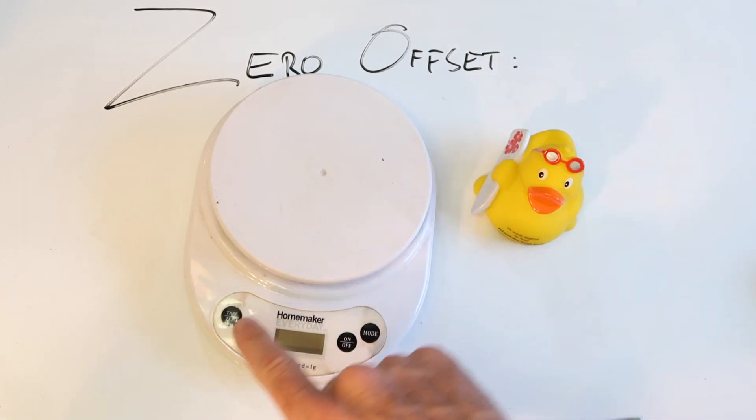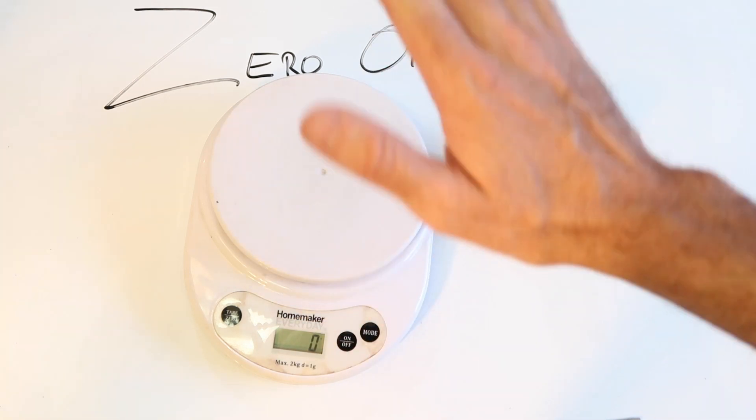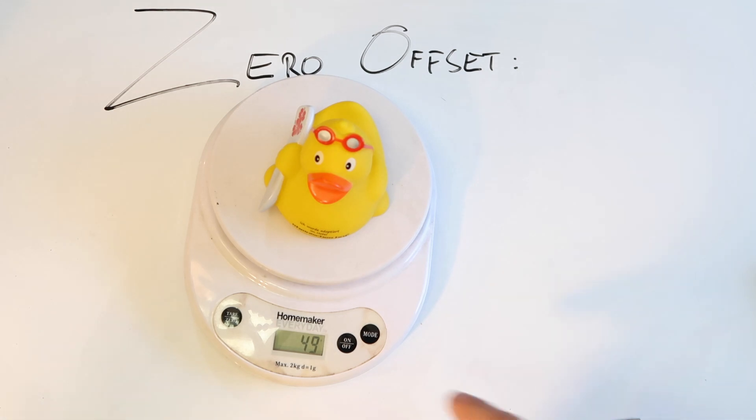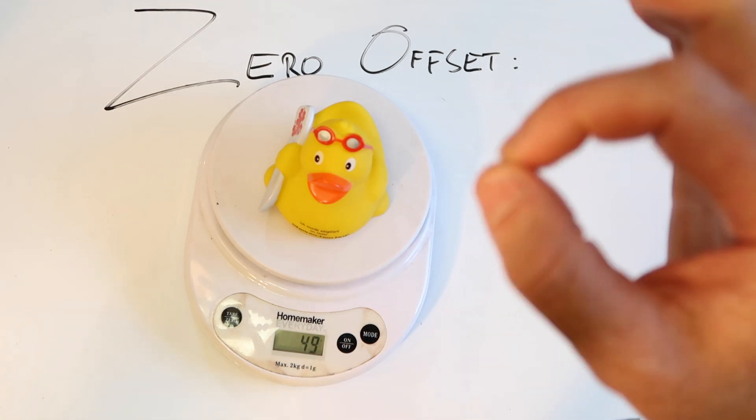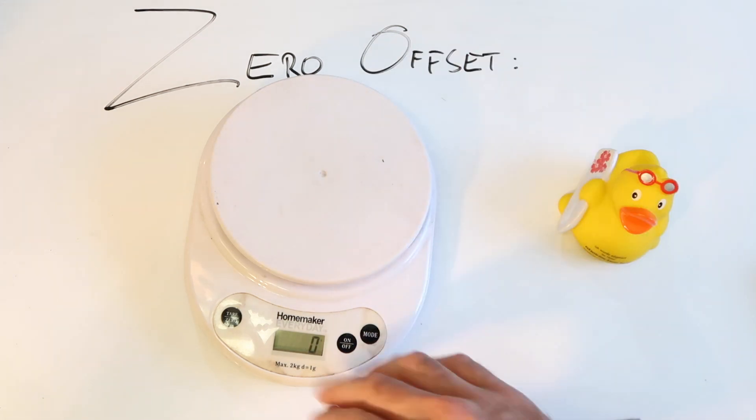Zero offset. Okay, the button here is called tear slash zero. That is exactly the same as when you zero your power meter. So we'll turn this machine on. There is no weight put on this, so there's zero, effectively zero torque or zero pressure on this. So we put the 49 gram rubber duck on and it reads 49 grams. Spot on, that is quite accurate. We take it off, it goes back to zero.